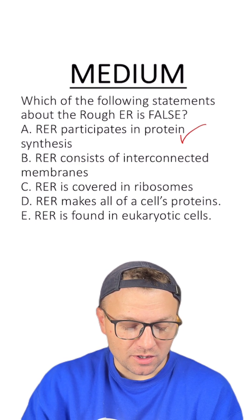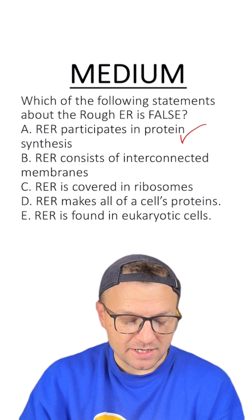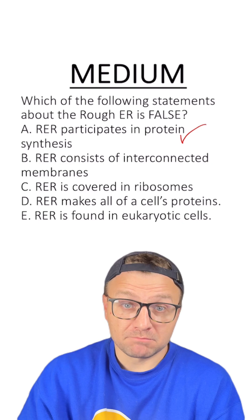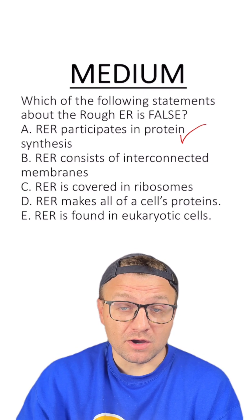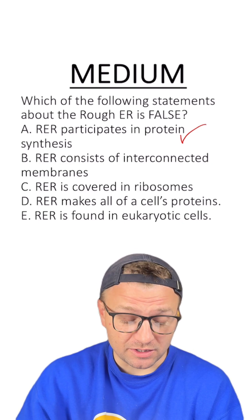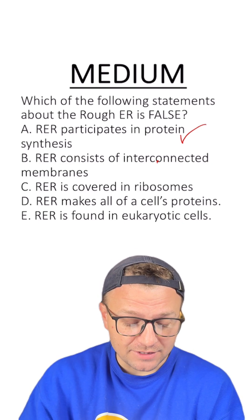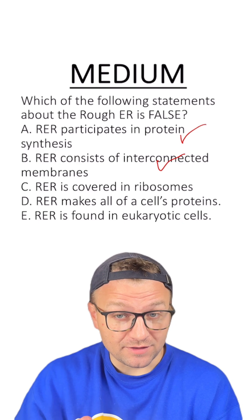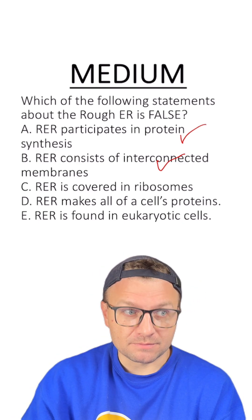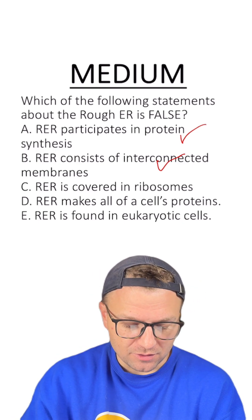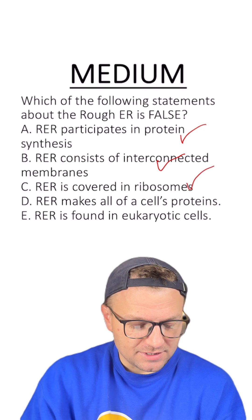Option B: rough ER consists of interconnected membranes? Yes, it has interconnected membranes with the smooth ER and even the nucleus, so that's correct — not the answer. Option C: rough ER is covered in ribosomes? Yes, that's why it's called the rough ER.